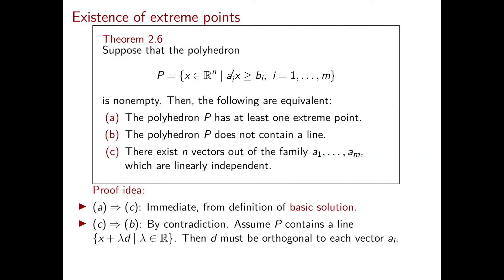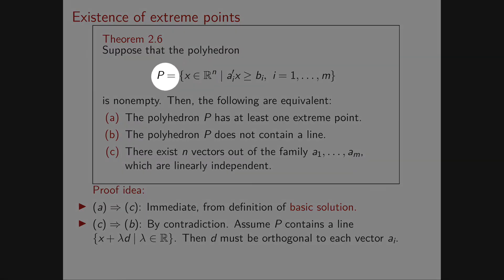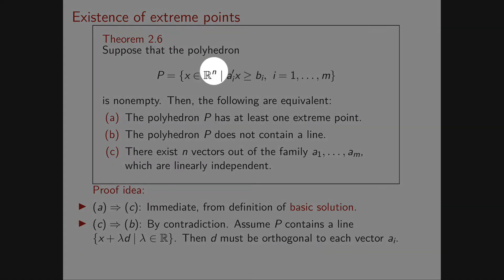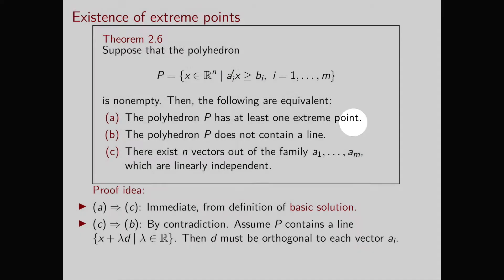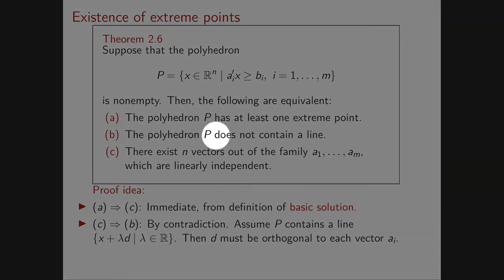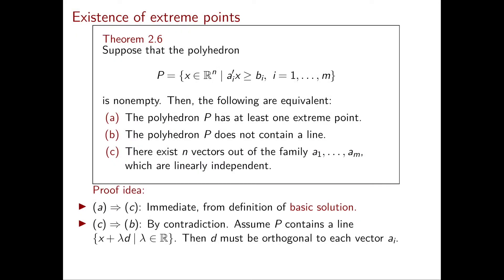Now we are ready to give the necessary and sufficient conditions for a polyhedron to have extreme points. We consider a polyhedron of the form: x in Rn such that Ai transpose x ≥ Bi for i from 1 to m, and we assume this polyhedron is non-empty. Then the following conditions are equivalent: (A) P has at least one extreme point; (B) P does not contain a line; and (C) there exist n linearly independent vectors among A1 through Am, which are the left-hand sides of the m linear inequalities defining P.